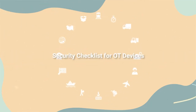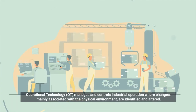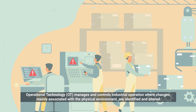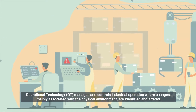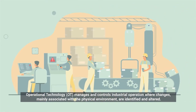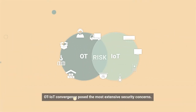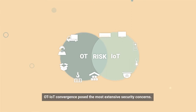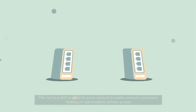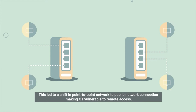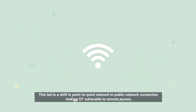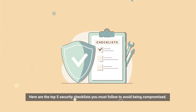Security Checklist for OT Devices. Operational technology manages and controls industrial operations where changes, mainly associated with the physical environment, are identified and altered. OT-IoT convergence posed the most extensive security concerns. This led to a shift from point-to-point network to public network connection, making OT vulnerable to remote access. Here are the top 5 security checklists you must follow to avoid being compromised.